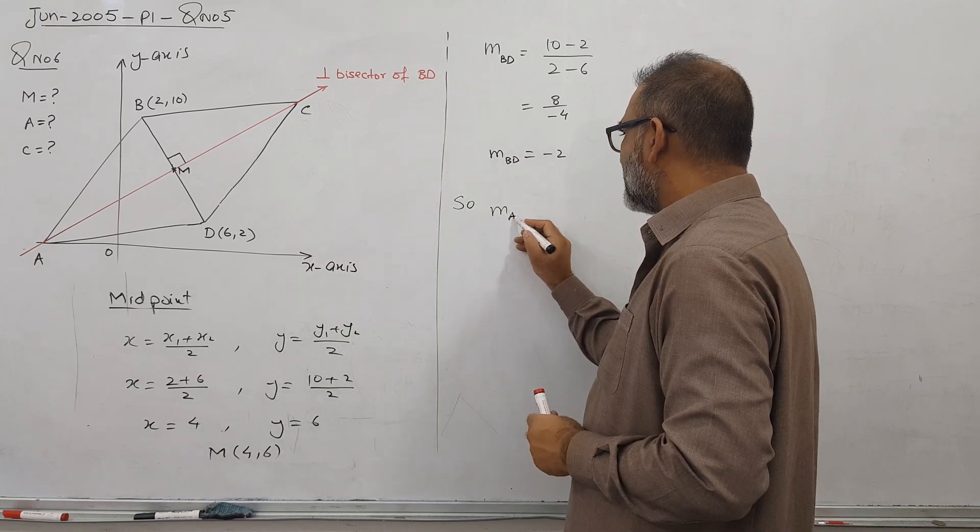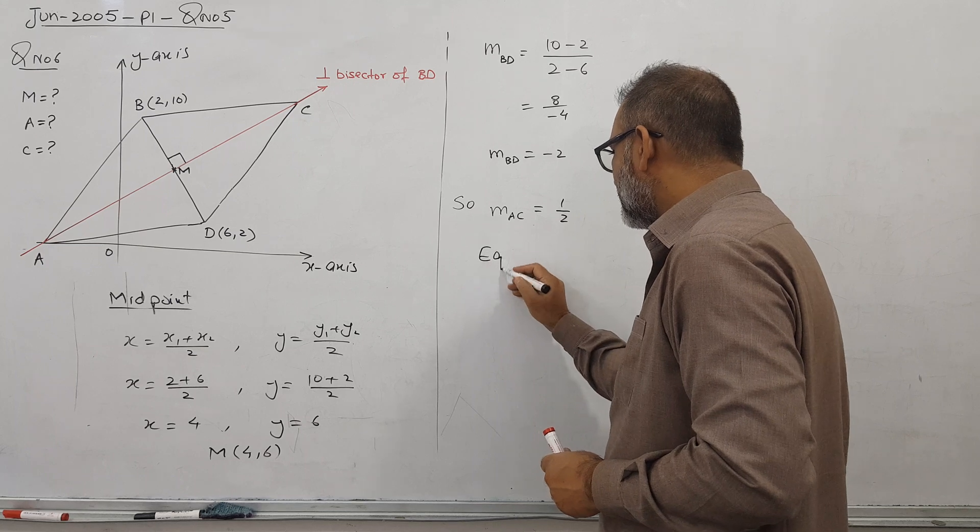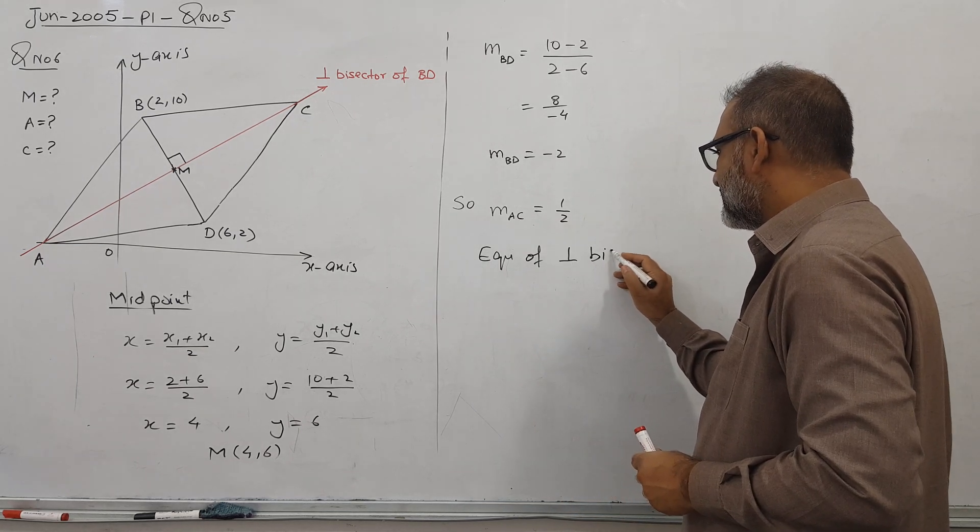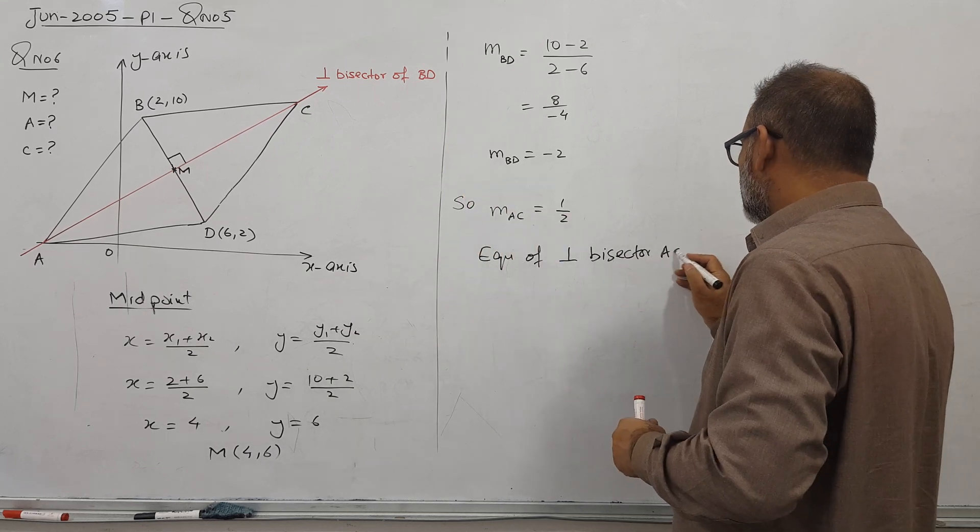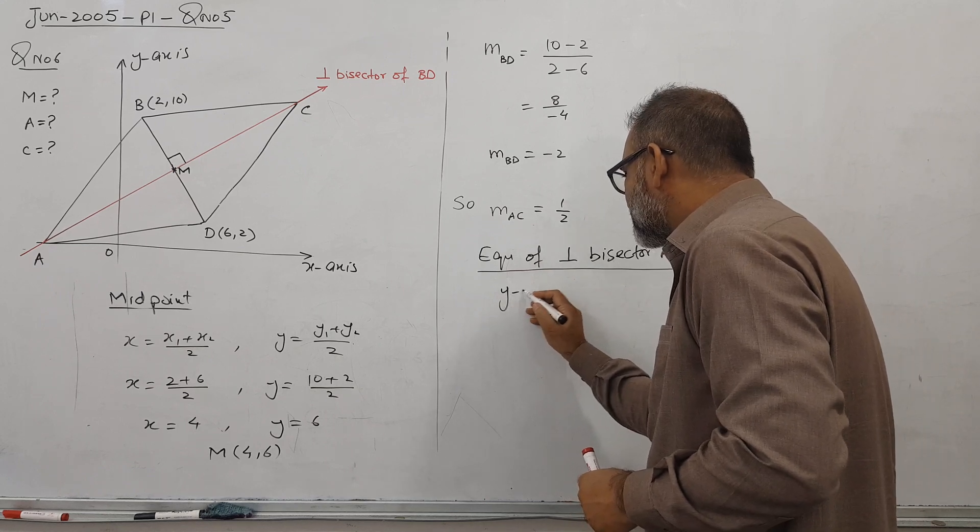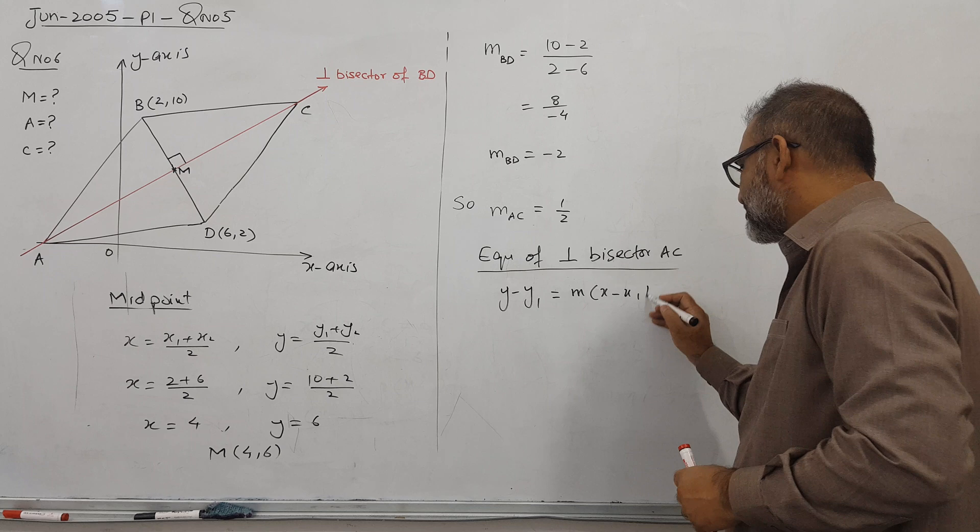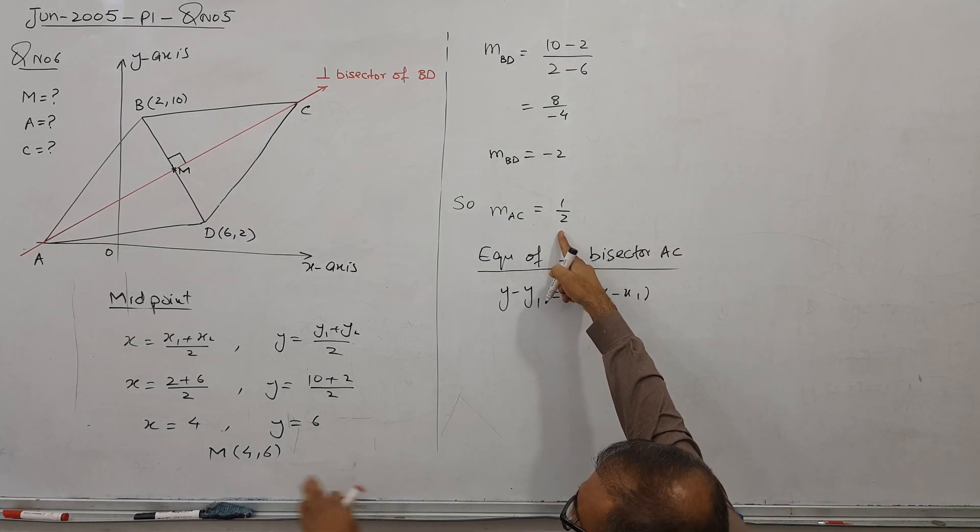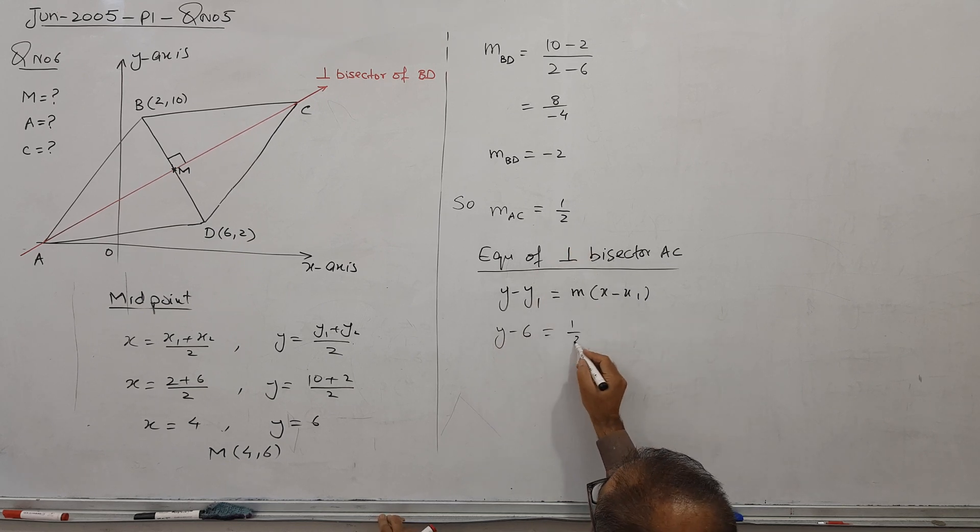So gradient of the AC. So gradient of AC becomes half. Now, equation of perpendicular bisector. Which name is, you can say no problem. So what is a equation? So Y minus Y1 equal to M times X minus X1. So I will use what? I will use this point and this. So Y minus 6.